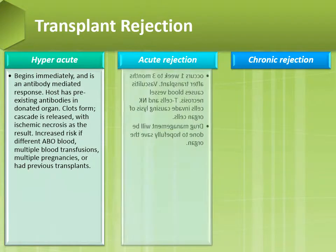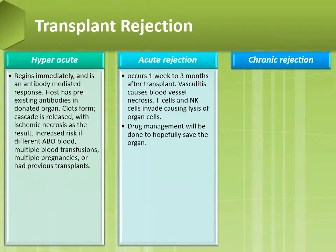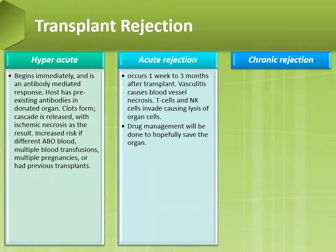Acute rejection usually occurs one week to three months after transplant. There is vasculitis that causes blood vessel necrosis, and T cells and natural killer cells invade, causing lysis of organ cells. Drug management will be done to hopefully save the organ.